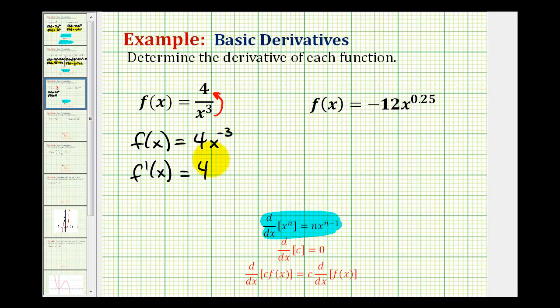So we're going to multiply by our exponent, that's negative 3, and then we're going to subtract one for the new exponent. So we're going to have negative 12 and this will be x to the power of negative 4.